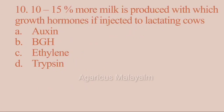Tenth question: 10–15% more milk is produced with which growth hormone if injected to lactating cows? Option A: auxin. Option B: BGH. Option C: ethylene. Option D: trypsin. Correct answer: Option B — BGH (bovine growth hormone). When BGH is injected into lactating cows, it leads to approximately an 18% increase in milk production.